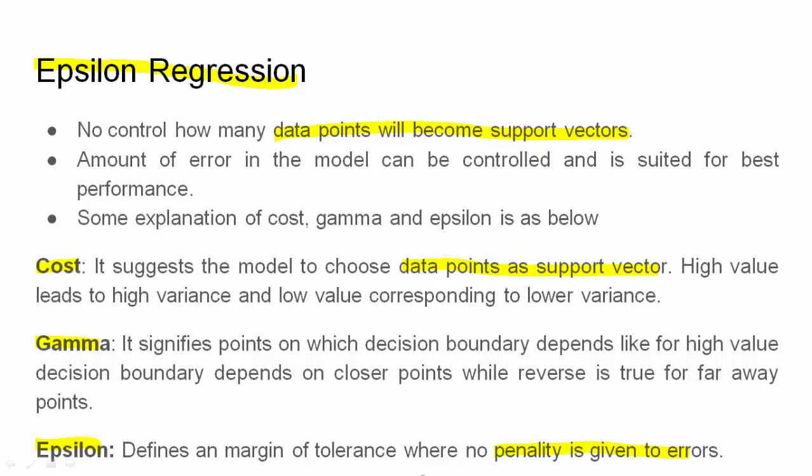The gamma function signifies which points will determine the decision boundary or on which points the decision boundary will depend. For example, if the value of gamma is high, we say the decision boundary will depend on far away points.